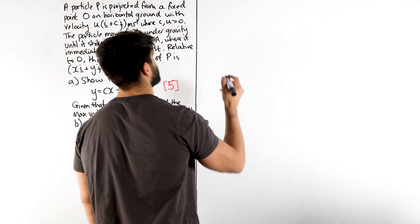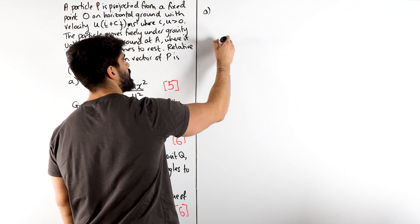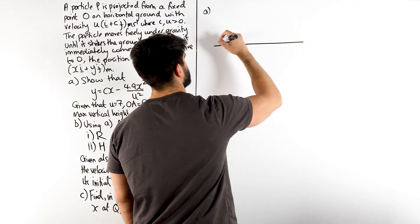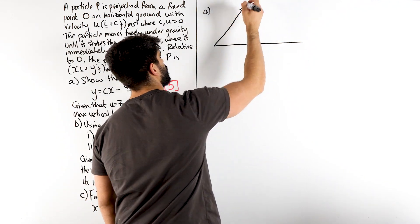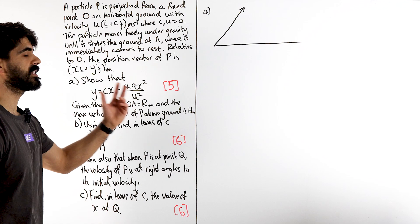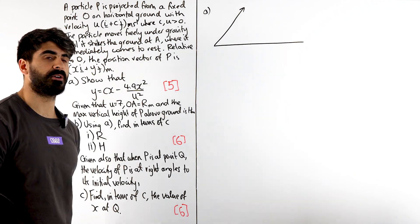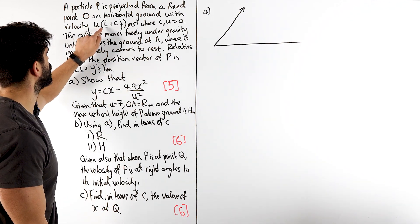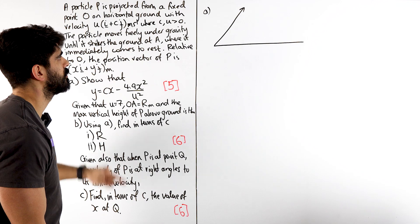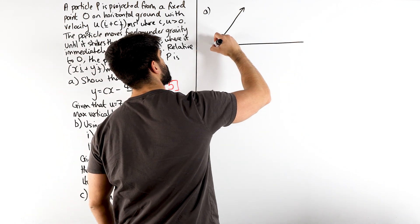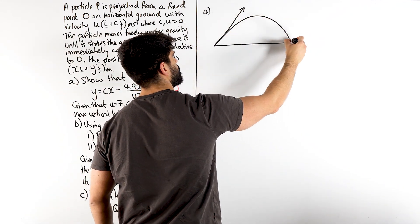Alright, so obviously the first thing we should always be doing is a cheeky sketch. Now, the beautiful thing about vectors, or things given in vectors, is they've already given you the components. So, they've said Ui + Cj. Now, do not be fooled. Students get fooled by this all the time.